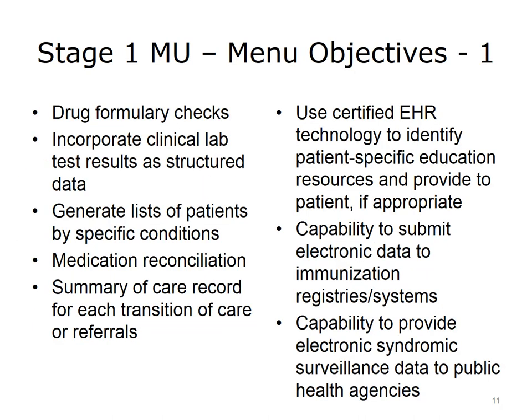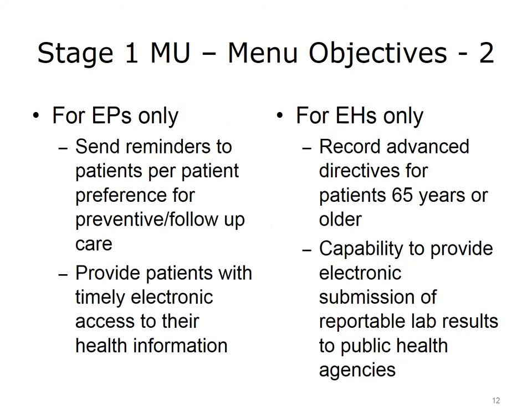This slide lists the menu objectives for Stage 1 that are common to both eligible professionals and eligible hospitals. They are: drug-drug formulary checks; incorporate clinical lab test results as structured data; generate lists of patients by specific conditions; medication reconciliation; summary of care record for each transition of care or referral; use certified EHR technology to identify patient-specific education resources and provide to the patient if appropriate; capability to submit electronic data to immunization registries and systems; and capability to provide electronic syndromic surveillance data to public health agencies.